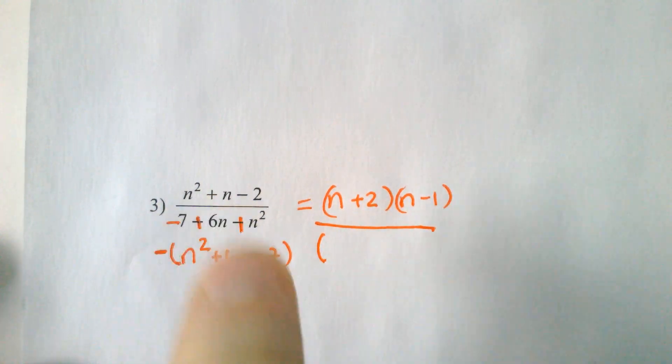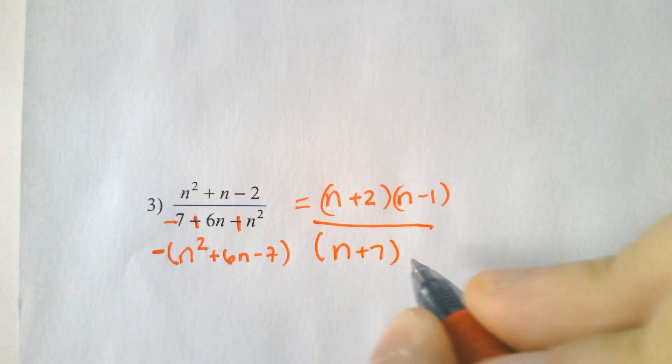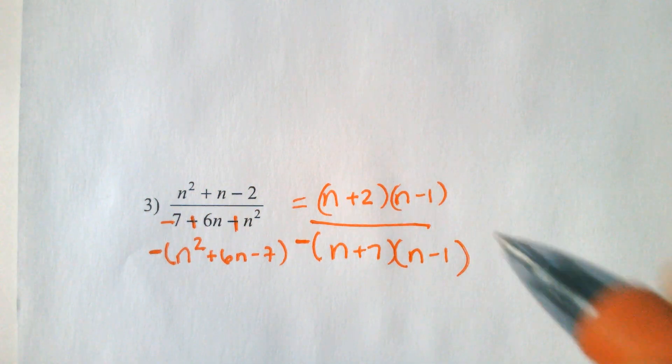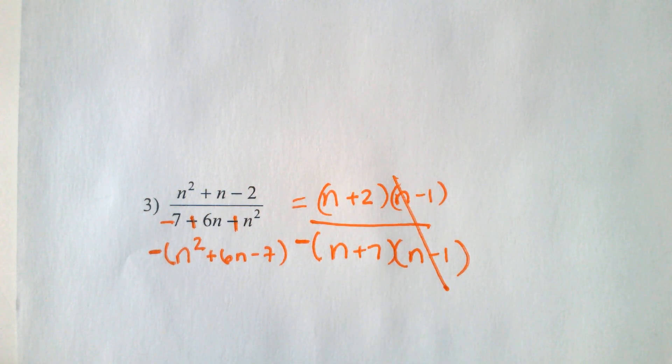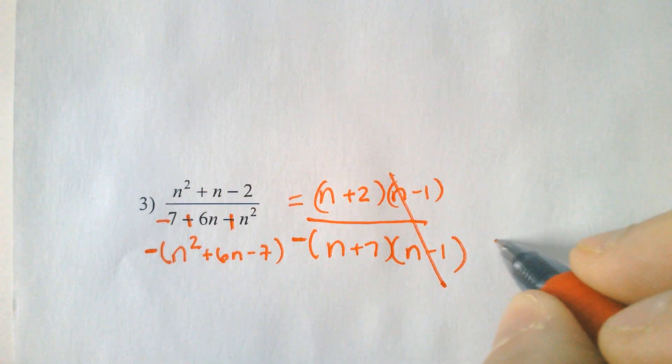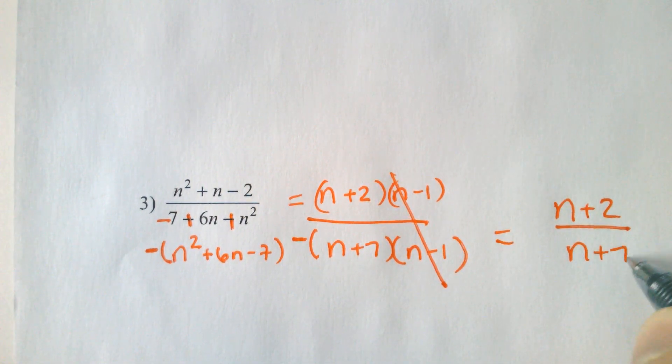So this is something that is very typical where it really wouldn't have factored or made the right things until you did this. Because now when I factor, it's what multiplies to negative 7 but adds to 6. That is positive 7 and negative 1. Don't forget the negative that we factored out in the beginning. And now these would cancel.